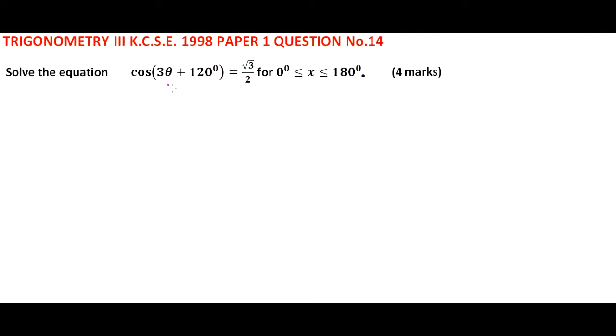The equation is cos(3θ + 120°) = √3/2 for x between 0 and 180 degrees. We can start by saying the cosine...